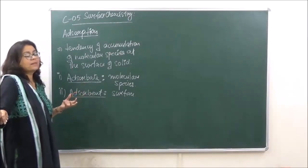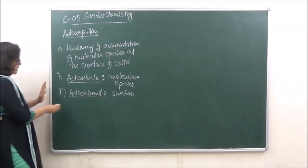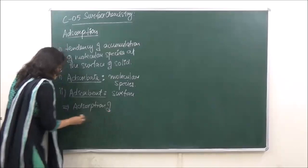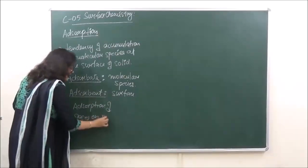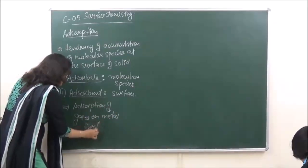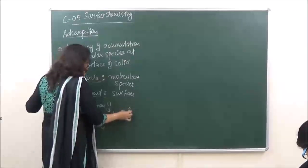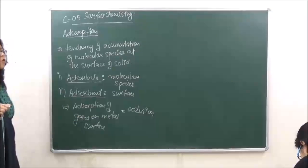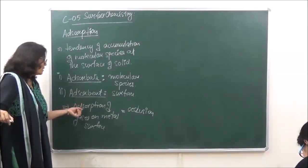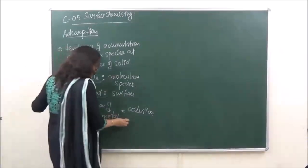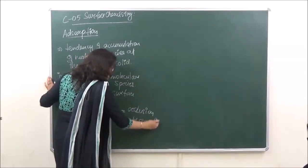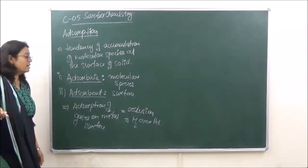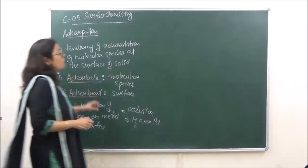When talking of adsorption of gases on a metal surface, this term is known as occlusion. Occlusion means when adsorption of gases takes place on the metal surface. For example, adsorption of hydrogen over palladium, hydrogen over platinum, or hydrogen over nickel — all these are examples of occlusion.